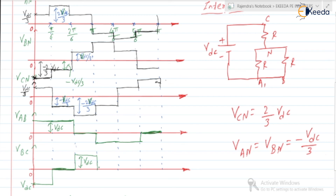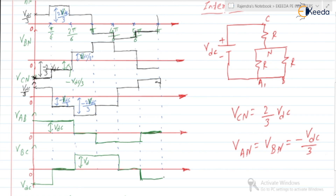For the VBC waveform: during the 4th interval, VBN minus VCN equals 2VDC/3 minus (minus VDC/3), which is positive — that is VDC. During the next interval it will be zero, then again minus. So the line voltage has a pulse of magnitude VDC and minus VDC. Phase voltages, on the other hand, have steps like 2VDC/3 and VDC/3.